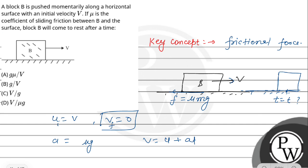So here v is 0, u is V. Acceleration is opposite to the motion, so here we have minus mu g into t. So here the time is equal to V upon mu g. So what is the time after this block stops?